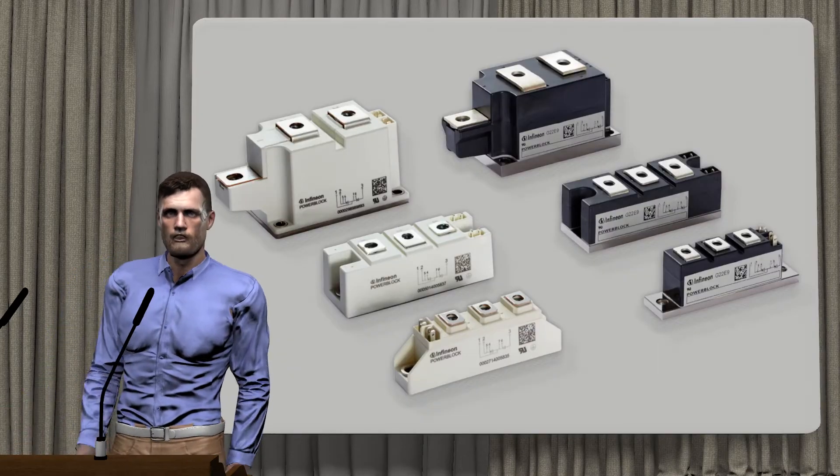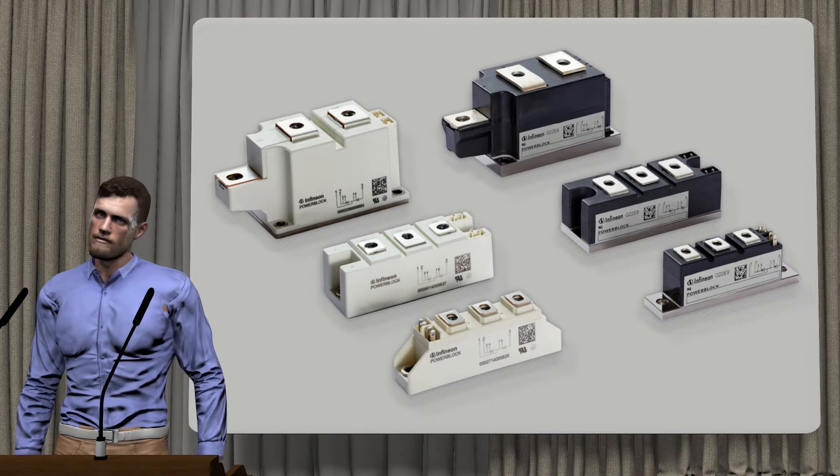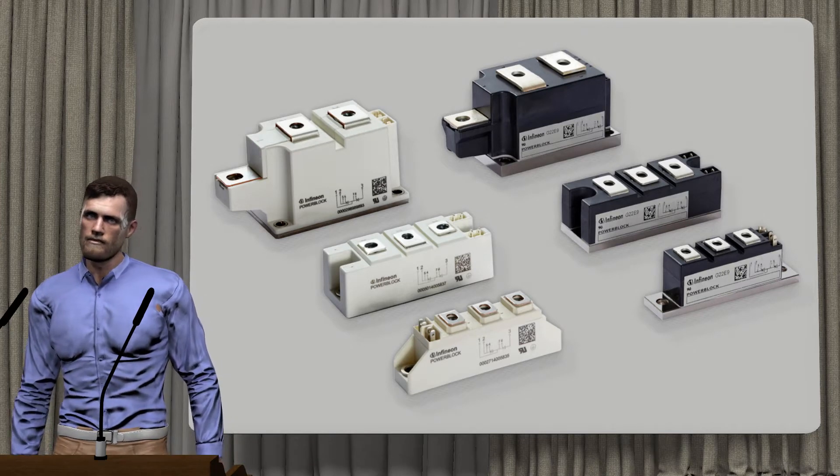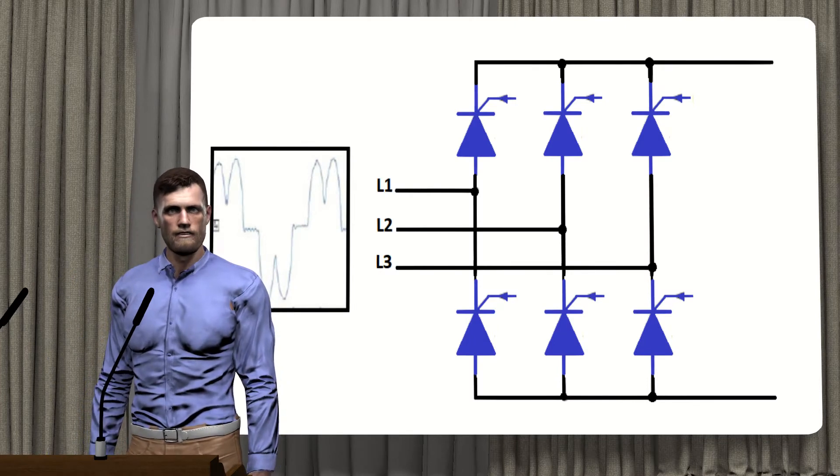This distortion in current is generated by power semiconductors, such as diodes, triacs, thyristors, transistors, etc., when trying to regulate and control the power feeding these electronic loads.